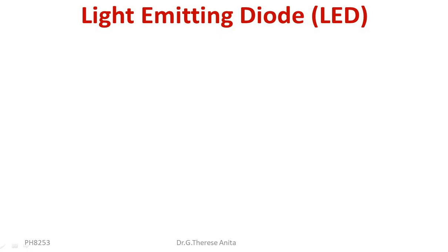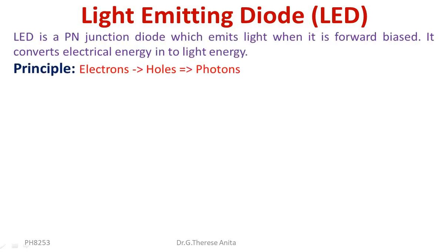By the name itself, one can understand that it is a diode that emits light. LED is a PN junction diode which emits light when it is forward biased. LED converts electrical energy into light energy.